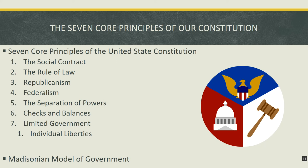Thomas Jefferson said: 'The greatest danger to American freedom is a government that ignores the Constitution.' The reason our government can secure the blessings of liberty is that it is bound by the rules and principles detailed in the Constitution. The moment those rules are being ignored, we have no reason to believe our government will not become tyrannical.